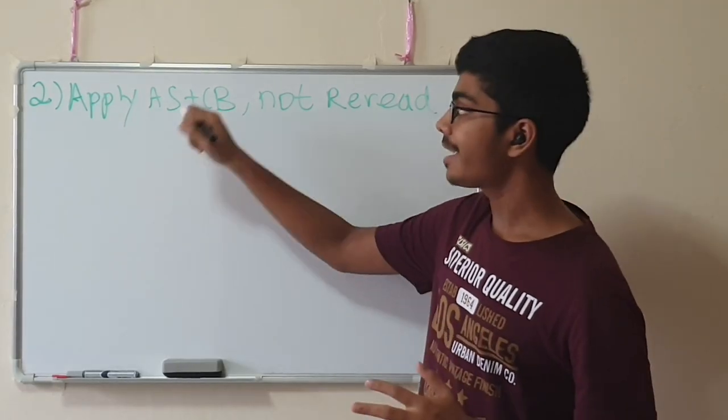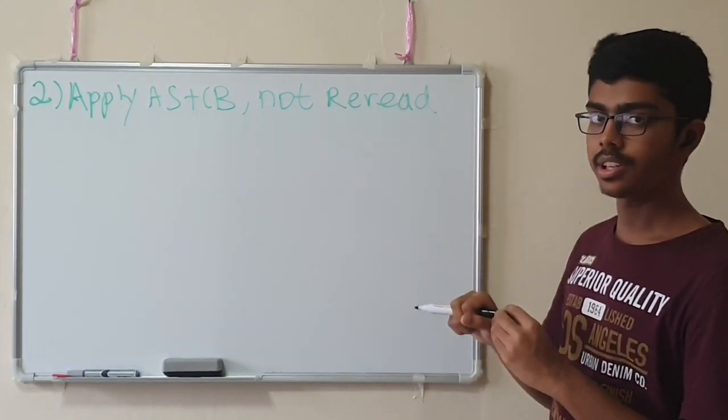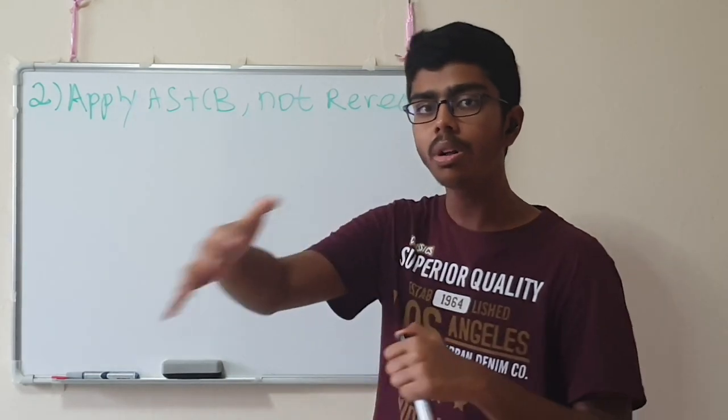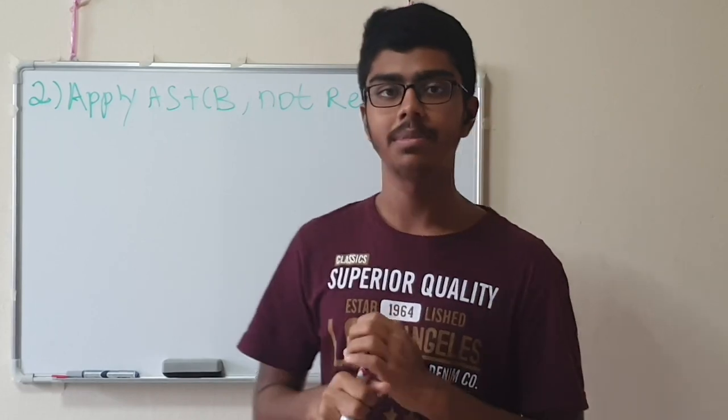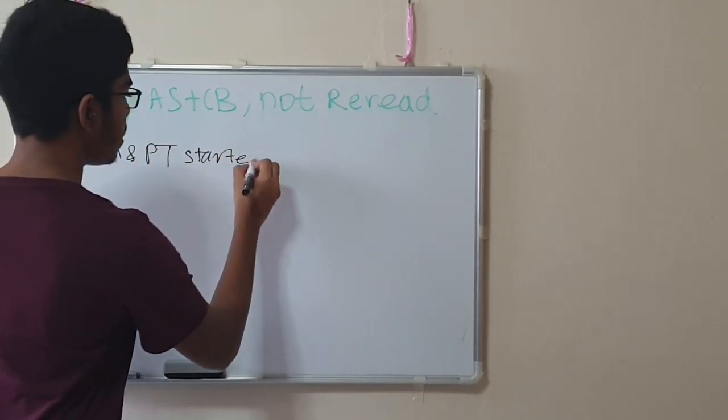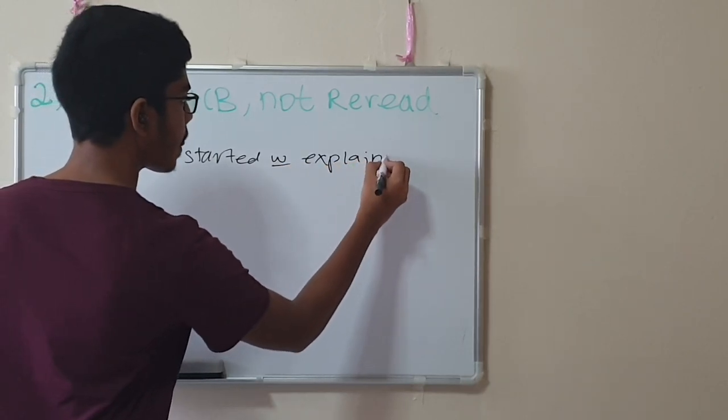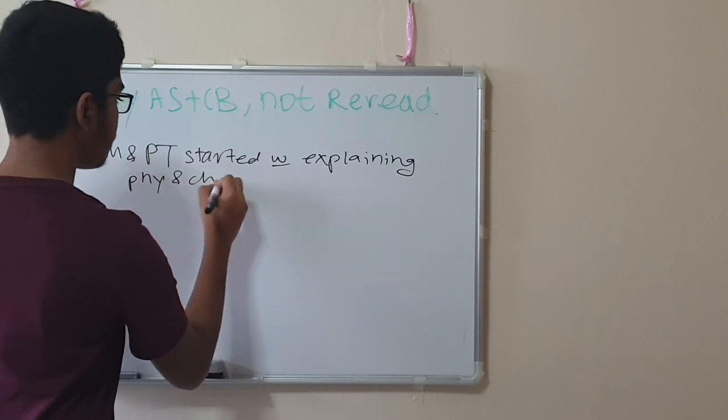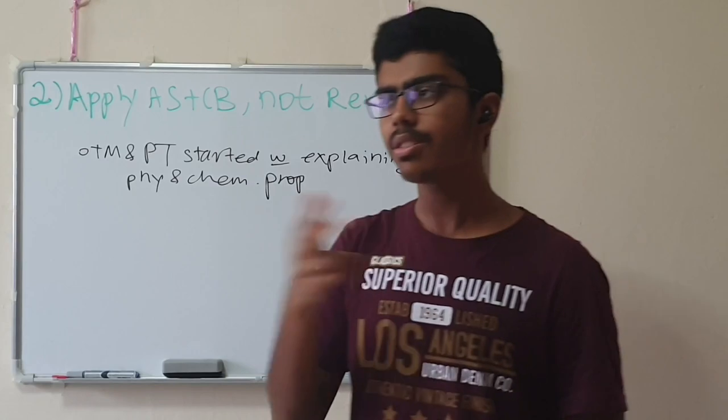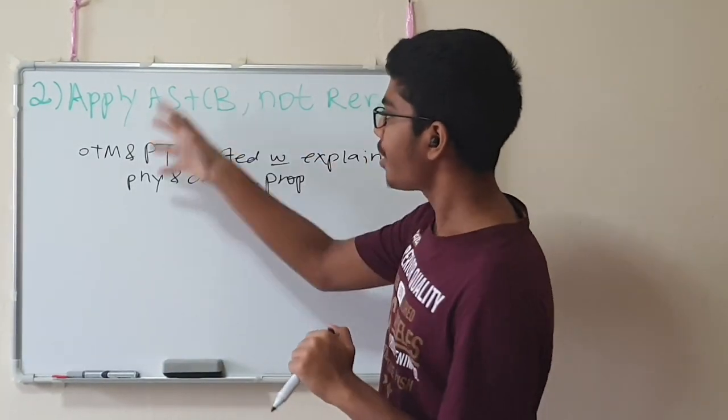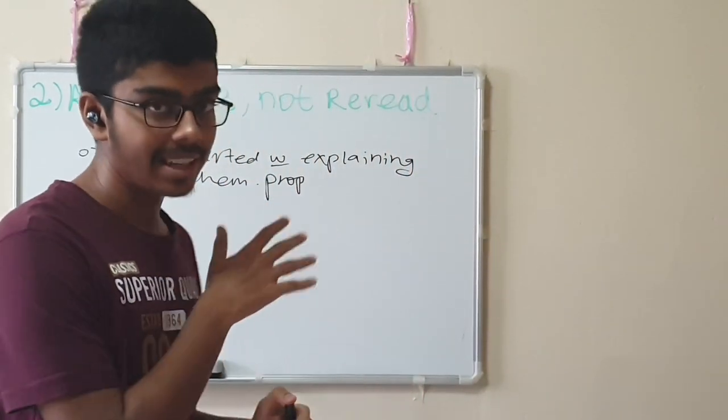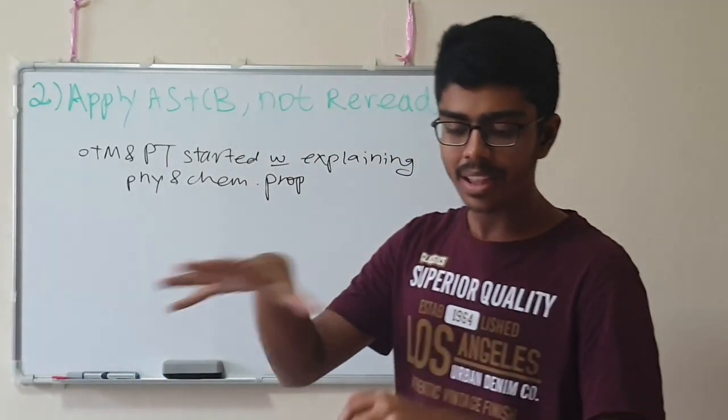Now our second strategy is to apply atomic structure and chemical bonding, not reread. This is an important trend that I want you guys to know. This is something that I raised in a previous video. If you have watched it about the macro mind map, that all the topics in chemistry are centered on the core, which is atomic structure and chemical bonding. The important trend that I noticed was transition metals and periodic table started with explaining physical and chemical properties. Both topics started out explaining this. The trends in first ionization energy, second ionization energy, solubility, electrical conductivity. I have already studied this thing in atomic structure and chemical bonding. So why study again in periodic table and transition metals? And exactly, you're right. I did not study this when I studied periodic table and transition metals. I just ignored this. I went to the main essence of what the topic means.